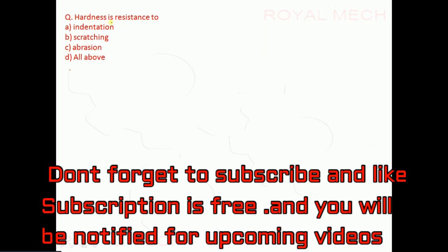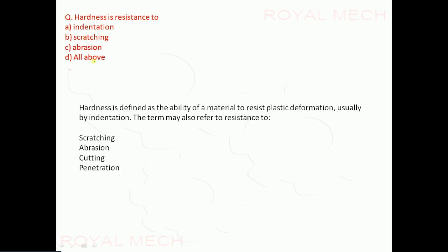Hardness is: resistance to indentation, scratching, abrasion, or all of the above. Hardness is defined as the ability of a material to resist plastic deformation, usually by indentation. The term may also refer to resistance to scratching, abrasion, cutting, and penetration. Since indentation, scratching, and abrasion are all included, option D — all of the above — is the correct option.